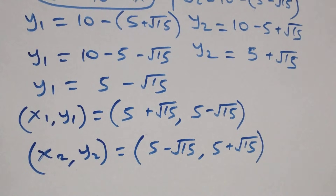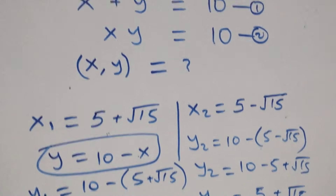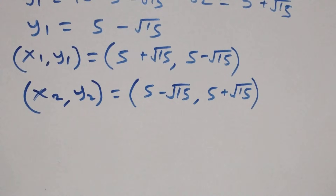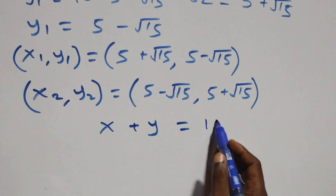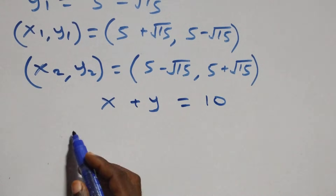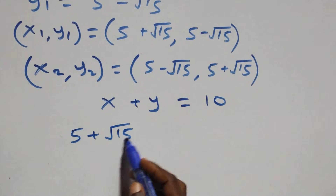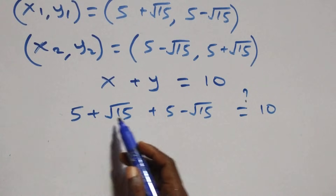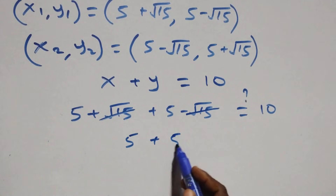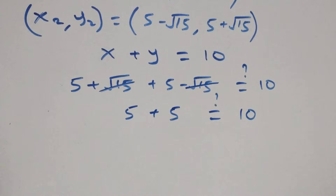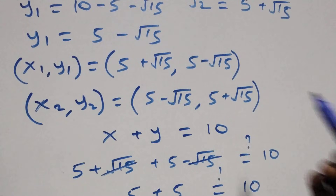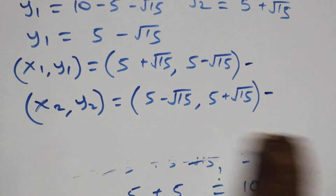Let's check if these solutions satisfy the given equations. Substituting into equation 1, x plus y equals to 10: using the first set, (5 plus root 15) plus (5 minus root 15) equals 10. The root 15 terms cancel, and 5 plus 5 equals 10, which equals 10. Left hand side equals right hand side, so the solution satisfies equation 1.